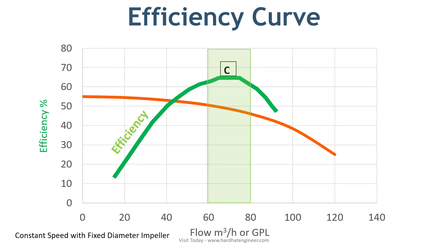This point is called the best efficiency point, or BEP, shown as point C on the chart. Ideally, you should run the pump within 10% of the BEP to avoid damage to the pump impeller and seal. When you select the pump, you have to choose the flow rate and head within this range.